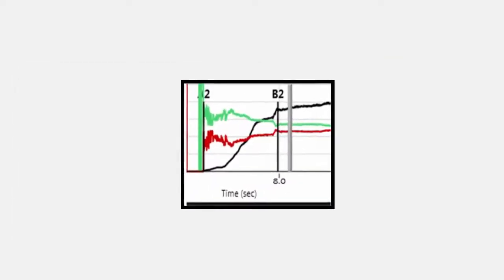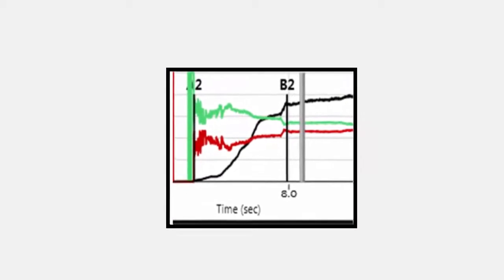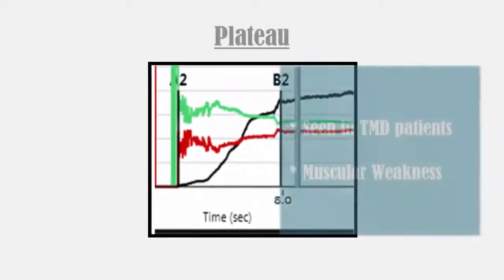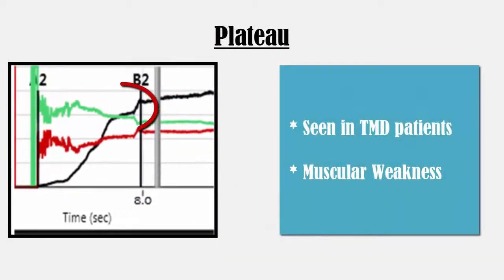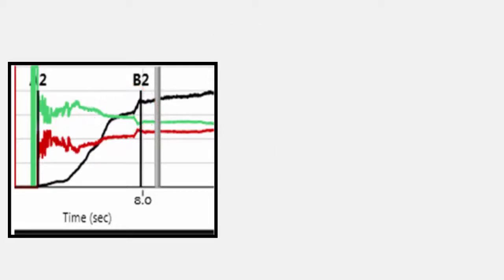The last example shows the black force line exhibiting a plateau, which may indicate the patient experiencing discomfort and as a result is reluctant to close. This is usually seen in TMD patients who demonstrate muscular weakness.